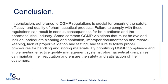Some common CGMP violations that must be avoided include inadequate cleaning and sanitation, improper documentation and record-keeping, lack of proper validation and testing, and failure to follow proper procedures for handling and storing materials. By prioritizing CGMP compliance and implementing effective quality management systems, pharmaceutical companies can maintain their reputation and ensure the safety and satisfaction of their customers.